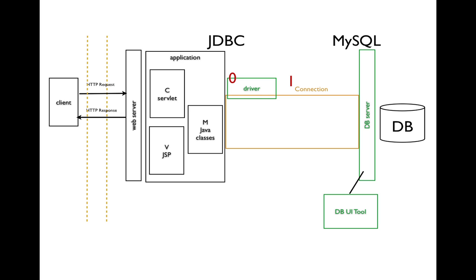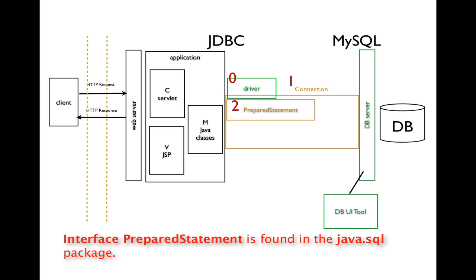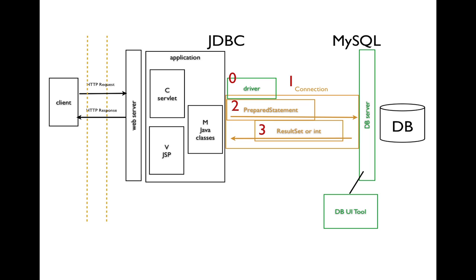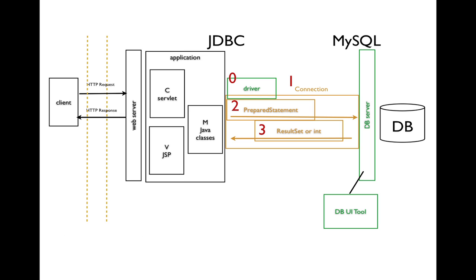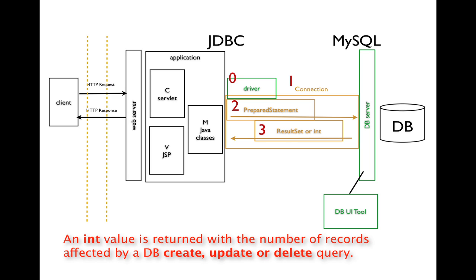Once we have that connection set up, we then need to prepare a command to send. We'll use a PreparedStatement object where we can add a SQL query, and once ready, we send the command. We'll receive either a ResultSet object or an int. The ResultSet is what we get if our SQL statement is doing a read on the database — typically a SELECT statement. For any other use case — create, update, or delete — we're changing the database, and instead of a ResultSet we'll get an int. The int value tells us how many records were affected by our command.